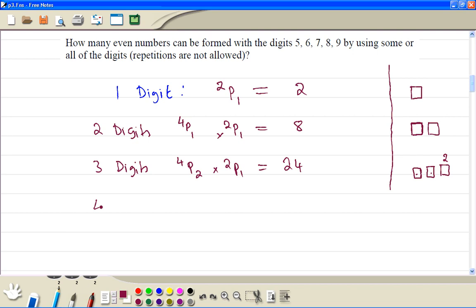If we choose 4 digits, 2p1. Here we have 4 digits and we have 3 positions to fill in. So that's 4p3, which is going to give us 24 times 2, so that will give you 48.